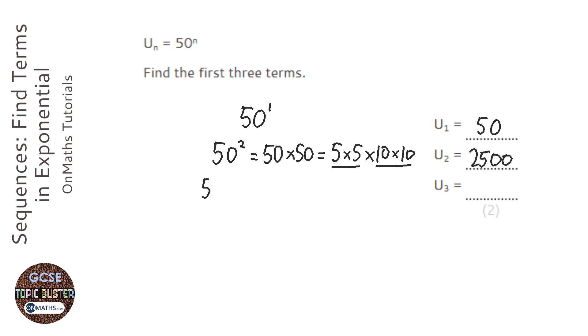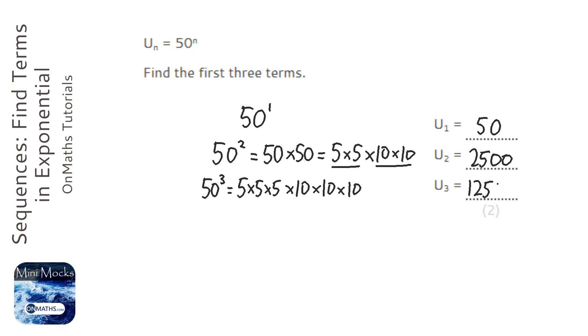And the last one is going to be 50 to the power of 3, which I can reorder to be 5 times 5 times 5 times 10 times 10 times 10. 5 times 5 times 5, or 5 cubed, is going to be 125. And then we've got the 1, 2, 3 tens at the end there, so it's going to be 125,000.